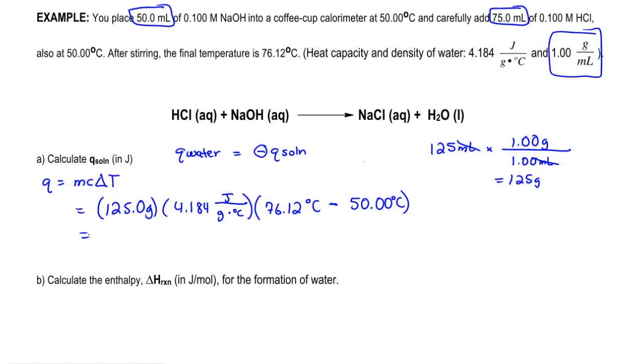When I multiply everything out, that gives me 13,660.8 joules as the Q of water. So, we can just plug it into here, so we're going to have 13,660.8 joules equals negative Q of solution.